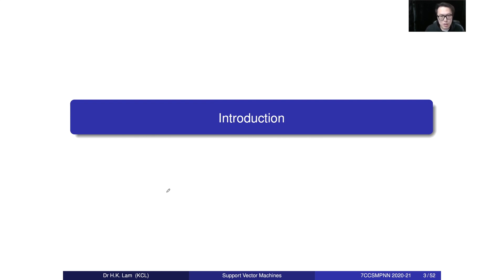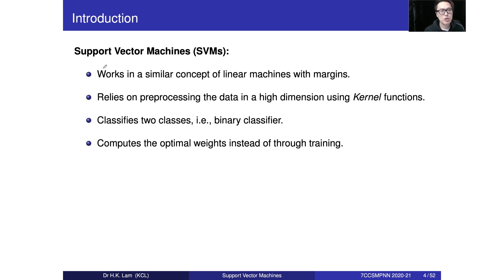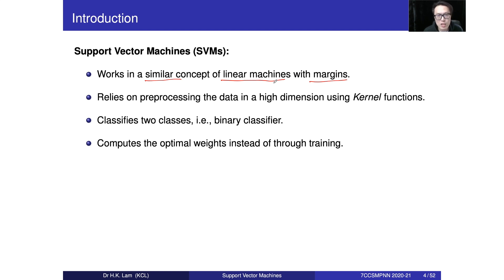The SVM works on a concept very similar to the linear machine — we talk about the linear discriminant function, but with consideration of the margin. The margin is the space between the dataset that we maximize. We can extend the linear machine into a non-linear one by mapping data from low dimension into a high-dimensional space using a kernel function, similar to the activation function in neural networks.